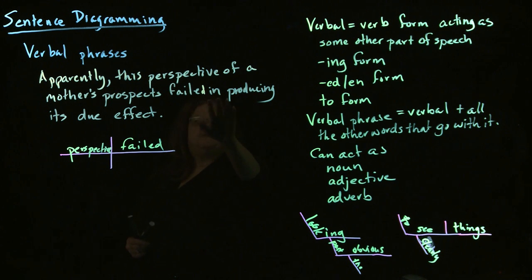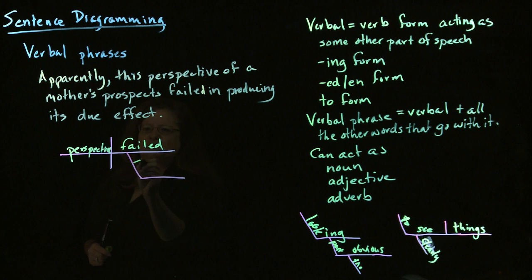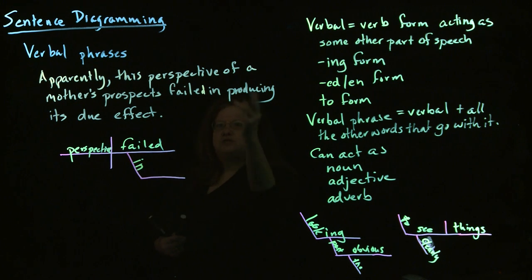So, first off, we have in. So, in producing. So, in is a preposition. So, we have a noun that's the object of a prepositional phrase. And, this is where the tricky part comes. For a noun, we do what I like to call a cake platter. So, you stick this little triangle here, and then you have this platter on top. And, that's where our verbal phrase is going to go.